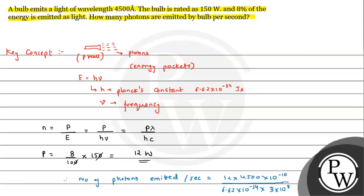So the value of n works out as follows: 12 times 45 gives 540, divided by the denominator which comes to approximately 19.86 × 10 raised to 18. Finally, the value comes out to approximately 27.19 × 10 raised to 18 photons. This is the number of photons emitted by the bulb per second. I hope you understood the solution — all the best!